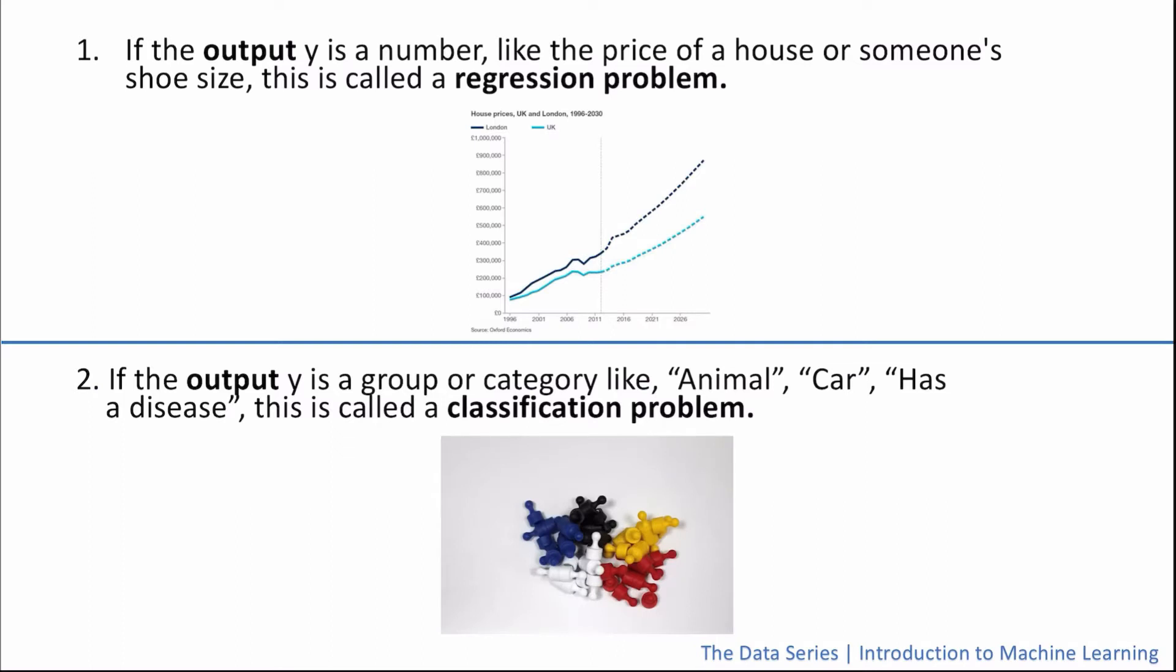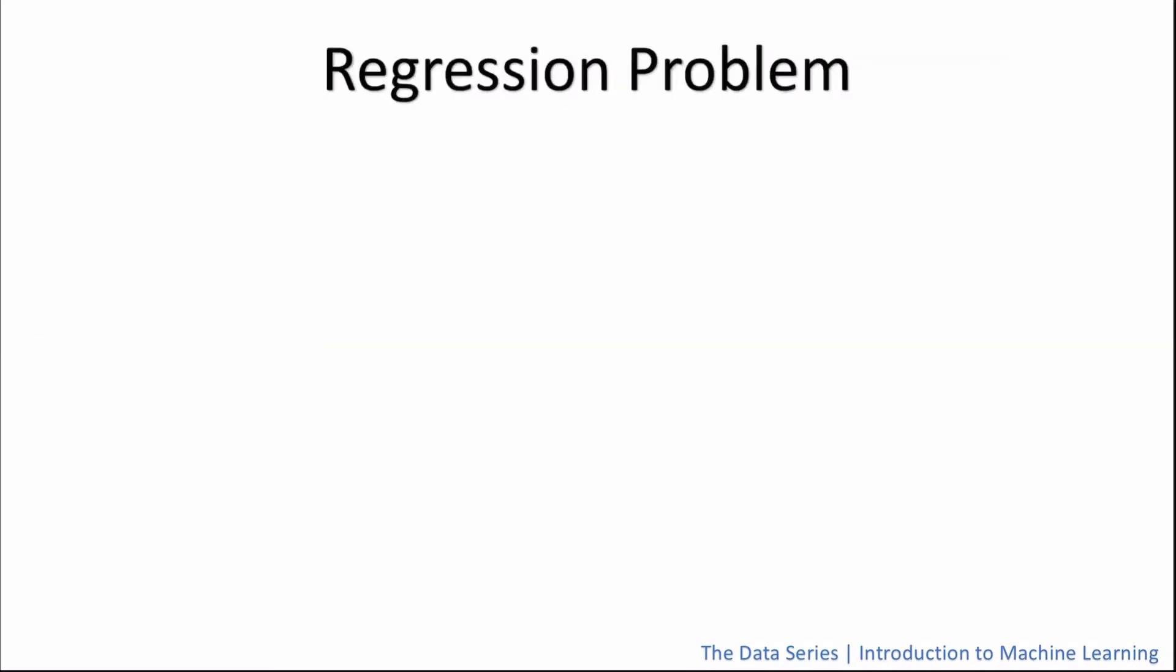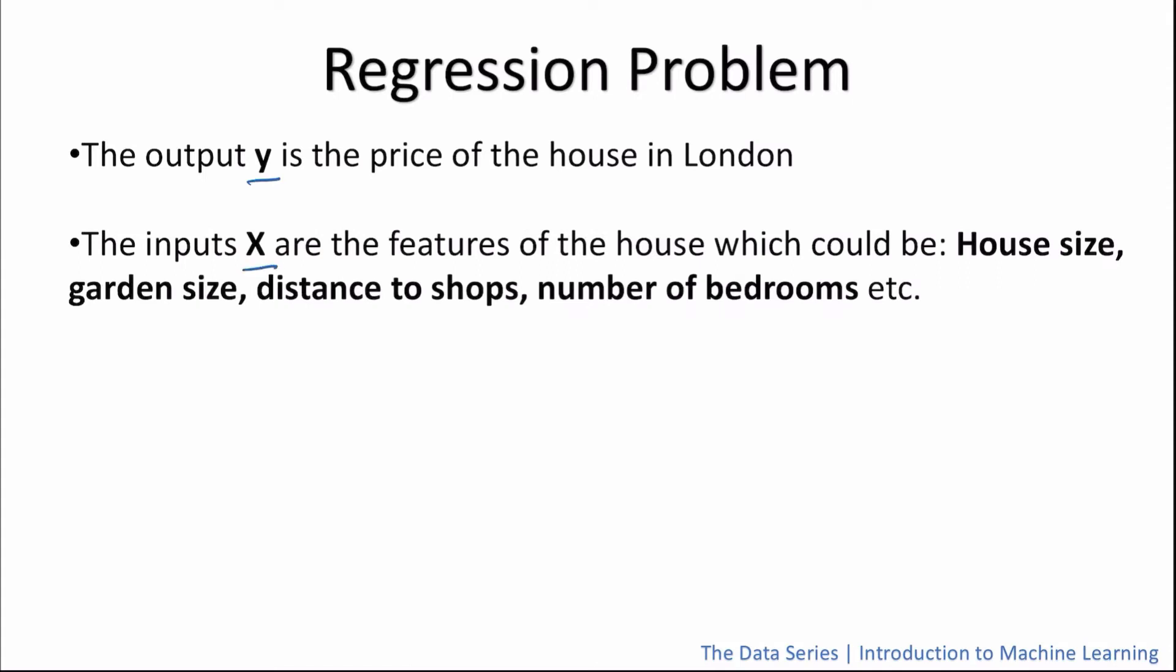Let's now go through an example of both a regression problem and a classification problem to make this idea more clear. For an example of a regression problem, let's say our algorithm wants to predict the price of a house in London based on various features of the house. So the output y is the price of the house in London and the inputs x are the features of the house, which could be for instance the house size, the garden size, the distance to the shops or the number of bedrooms.